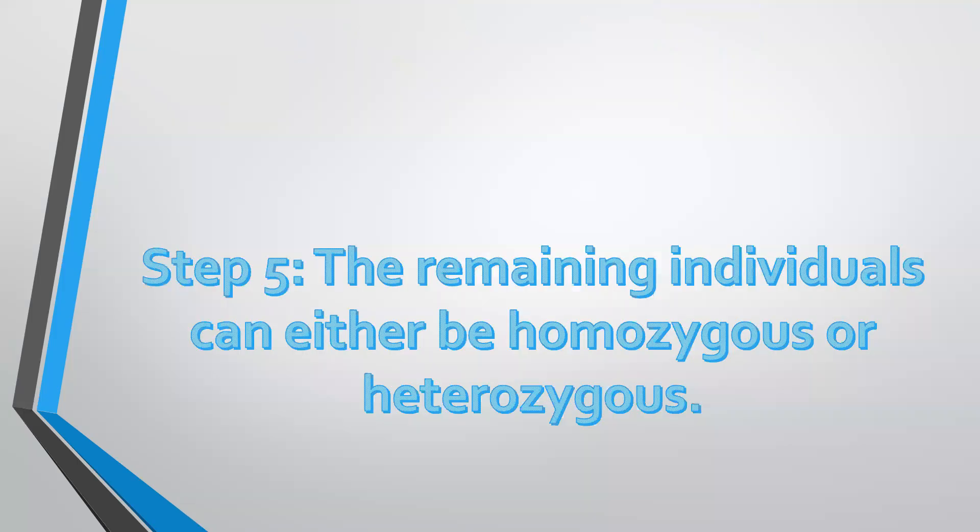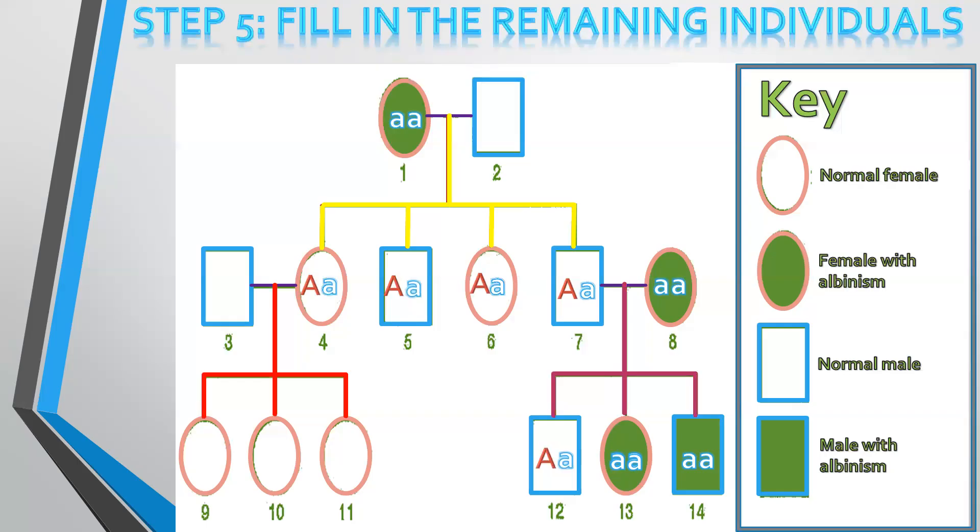Now, the remaining individuals in step five, the remaining individuals could either be homozygous or heterozygous. So here we won't be sure. And if you asked about the genotype, you'd say that they are either homozygous dominant or heterozygous. So either they have two capital letters or a capital and a small, an allele for normal and an allele for albinism or two alleles for normal. So number two, number three, nine, ten and eleven, we are not sure of the genotype. And therefore, we'd say that it could be one of these two. It's only if they have a child or a parent that has albinism, then we'll be certain that they do have a heterozygous condition.